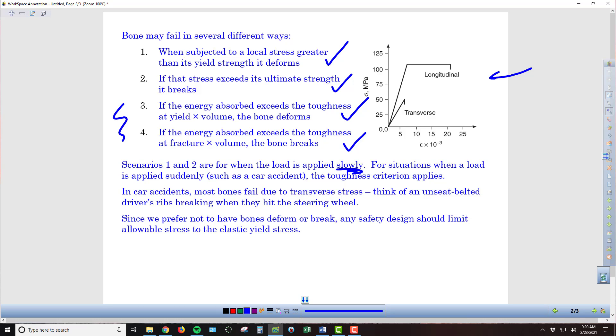In car accidents most bones are going to fail because of the transverse stress, meaning that we're going to end up hitting perpendicular to the axis of the bone rather than longitudinally. We would obviously prefer bones not to deform or break, and so any kind of safety design that we put into a vehicle, we've got to see how we can limit the stress that the bone is going to experience to its elastic yield stress. Of course we'd prefer no stress at all, but if we are going to be forced to experience some stress we want to make sure that it's below that yield stress and then certainly below that ultimate strength, that breaking point.